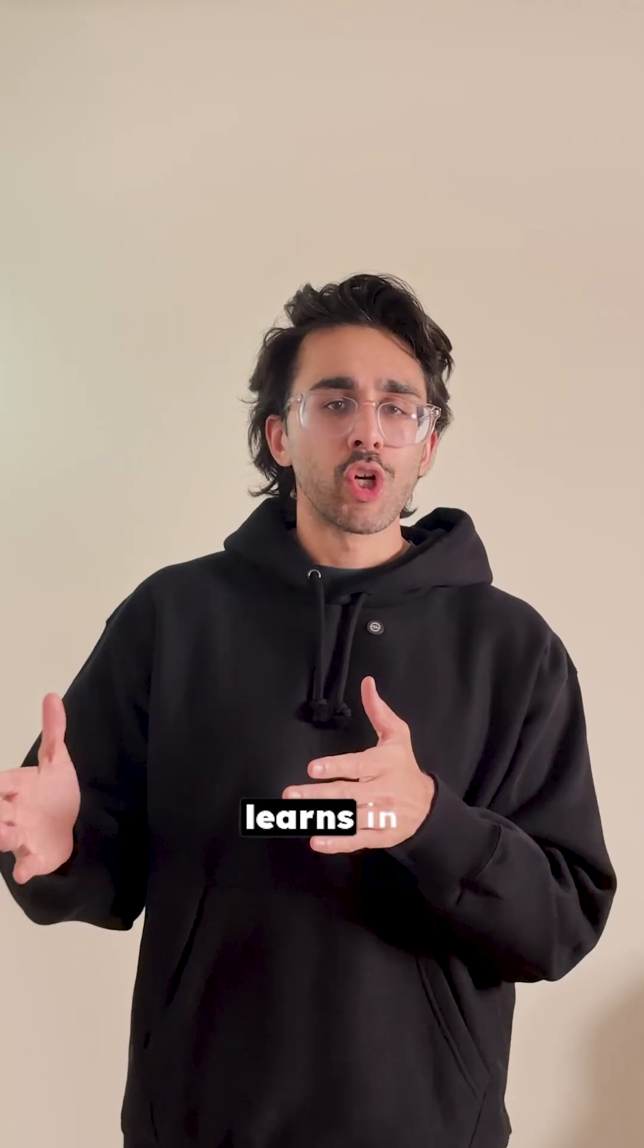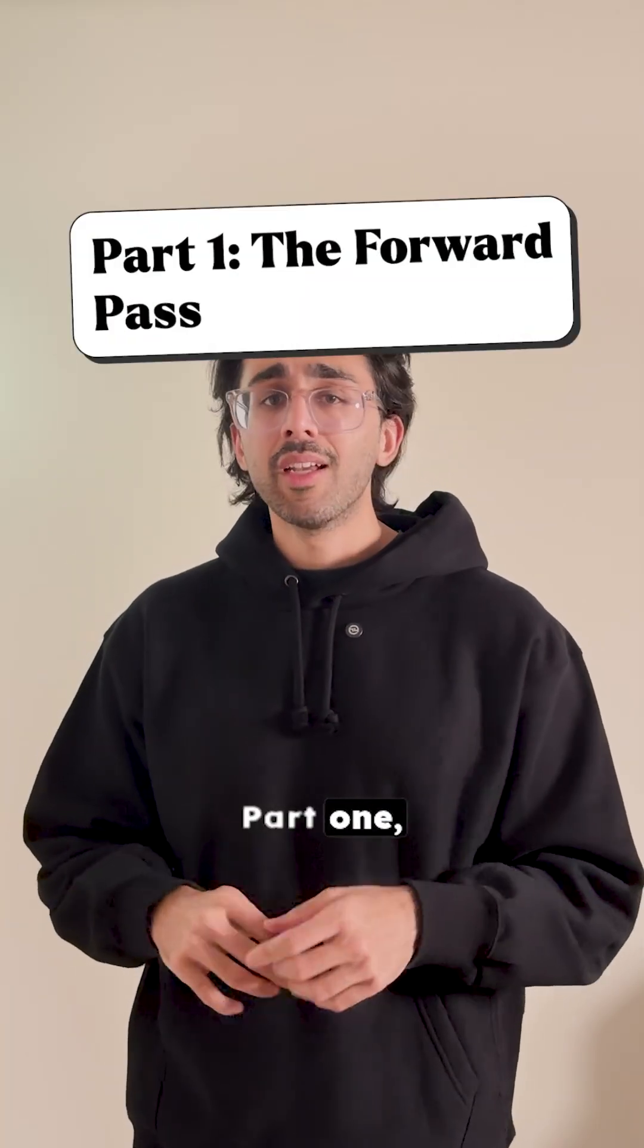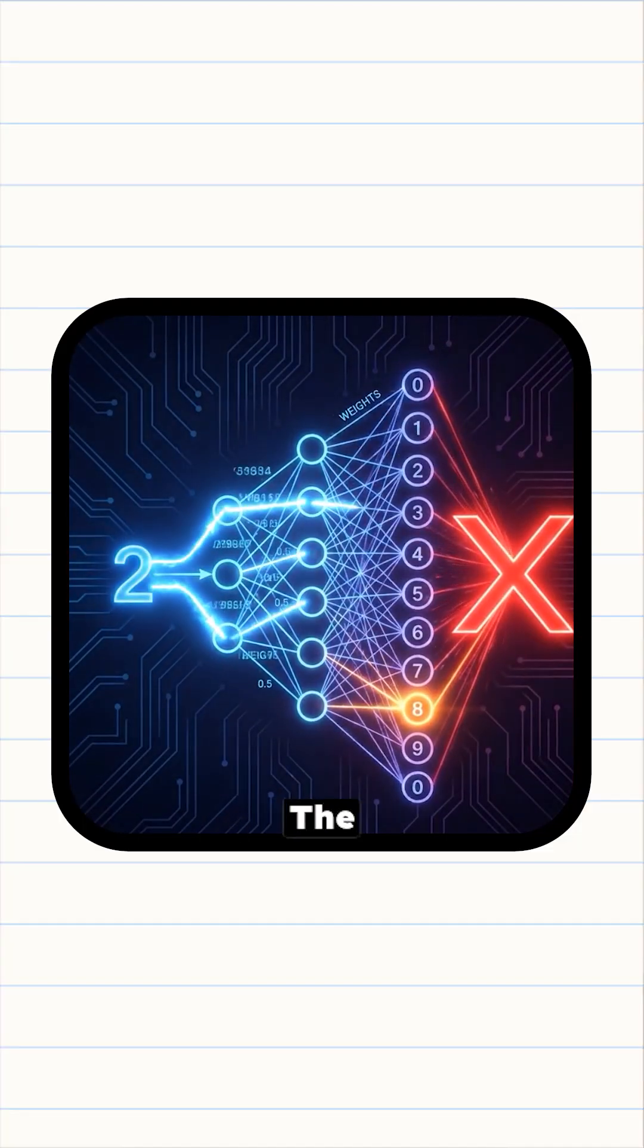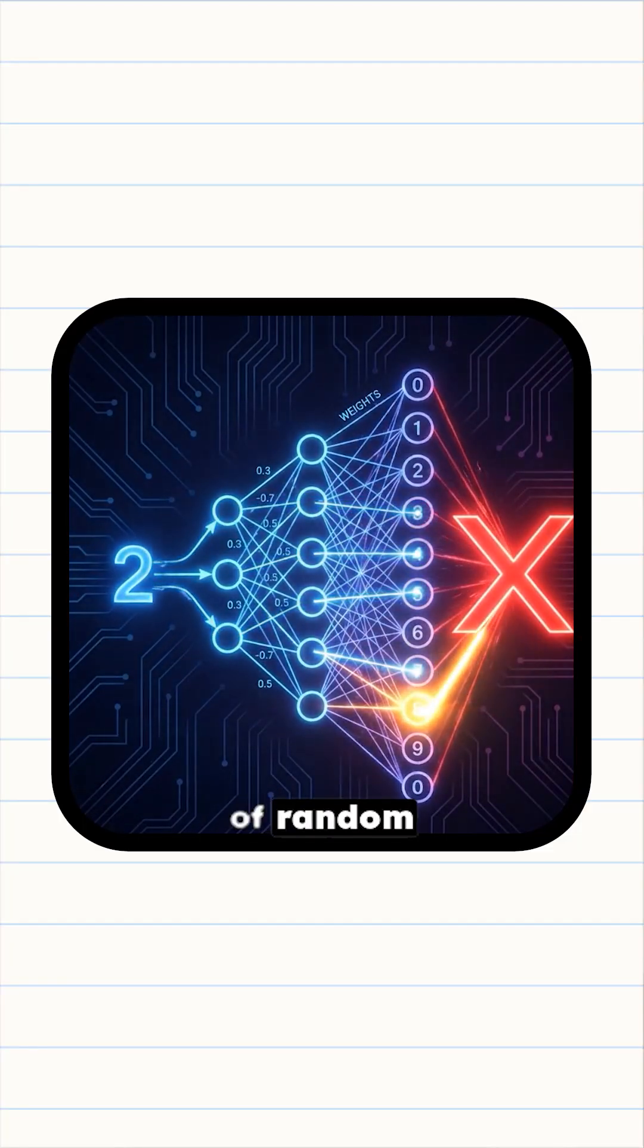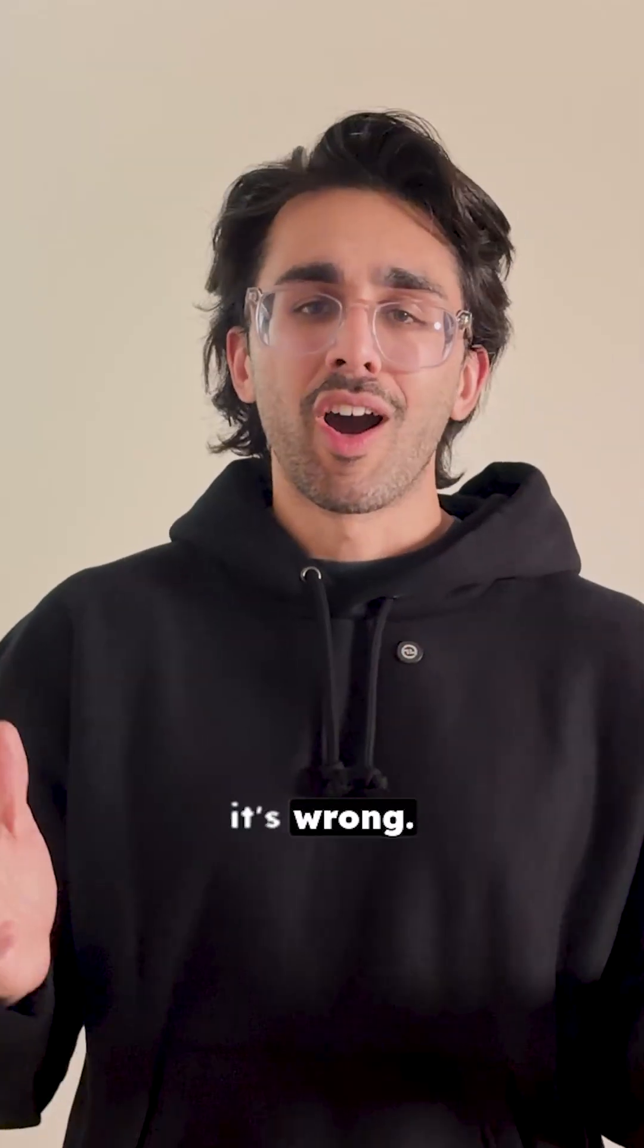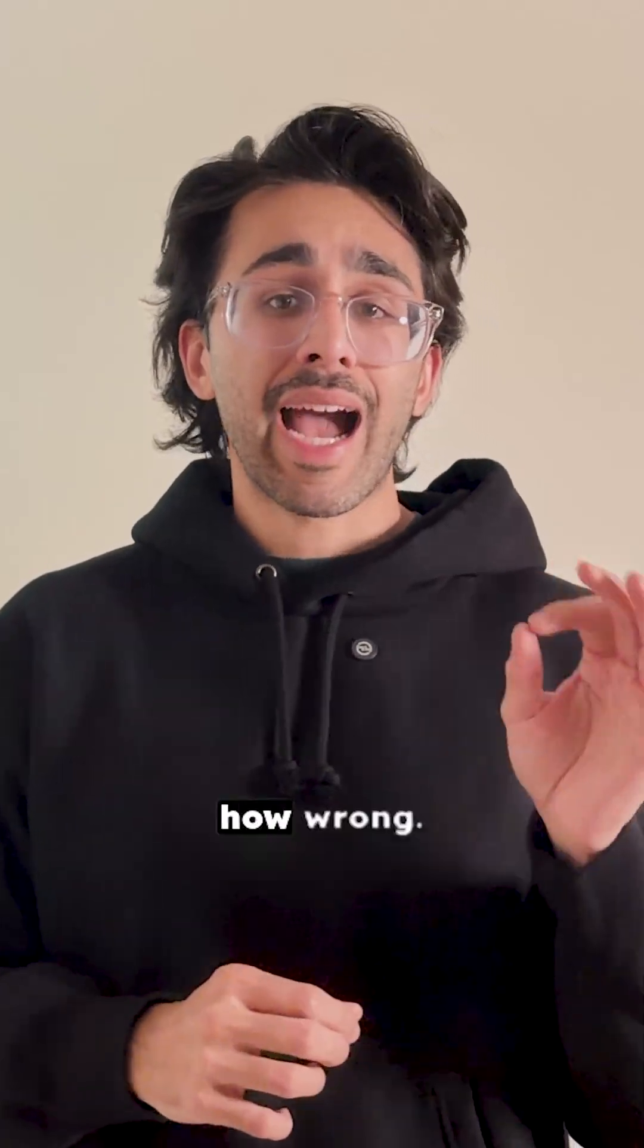So here's the plot. A network learns in two parts. Part one, the forward pass. You feed it data, say a picture of a number two, and it flows through the network, gets multiplied by millions of random weights. At the end, it makes a wild guess. That's an eight, but it's wrong. A loss function calculates how wrong.